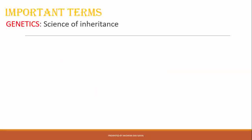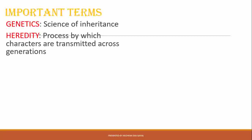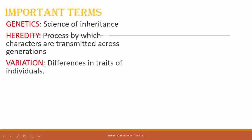Genetics deals with how characters can be transmitted from one generation to the next. Heredity is the process by which characters are transmitted across generations — the process whereby specific characters or features present in an individual get transmitted from parent to offspring, and from that offspring to the next generation. The study of this entire process is the branch of science known as genetics.